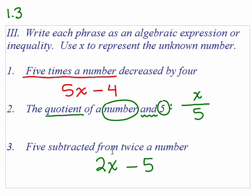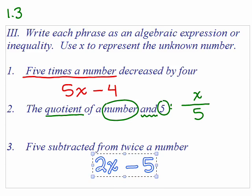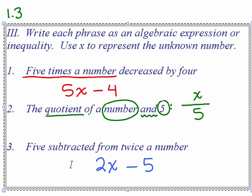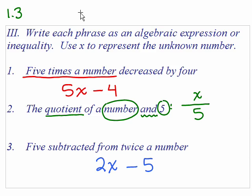Let's use another color to make it more obvious. If it had said "5 decreased by twice a number," that's more similar to number 1, and you'd start off with 5 and put minus 2x, because it says "5 decreased by." But if it says "5 subtracted from something," that means you have to have something to begin with so you could subtract 5 from it. So the answer is 2x minus 5. That's how to write those three phrases as algebraic expressions.